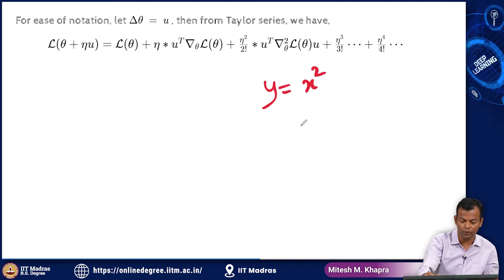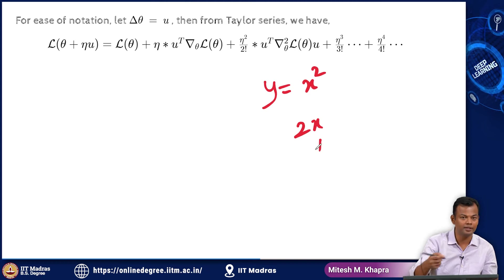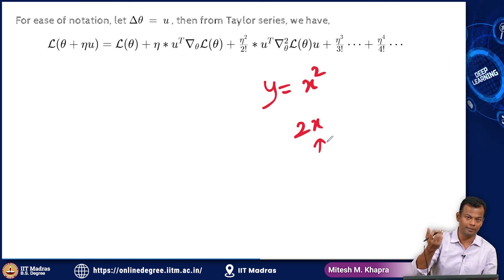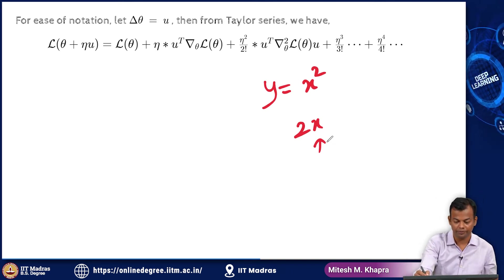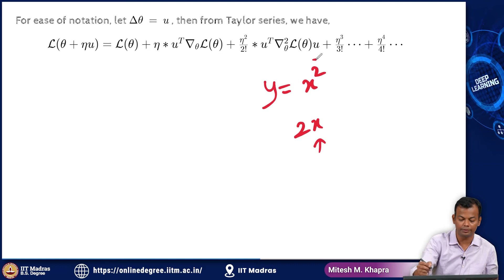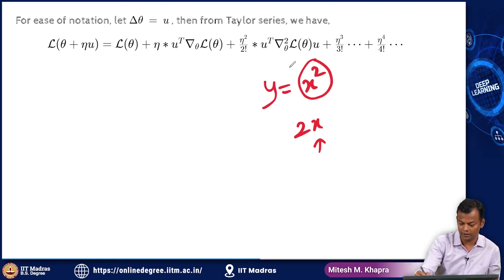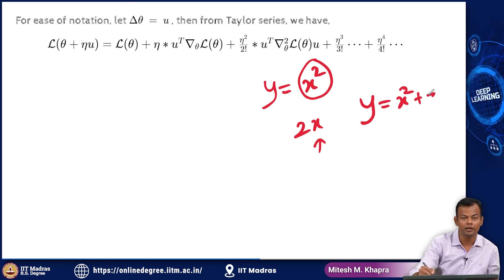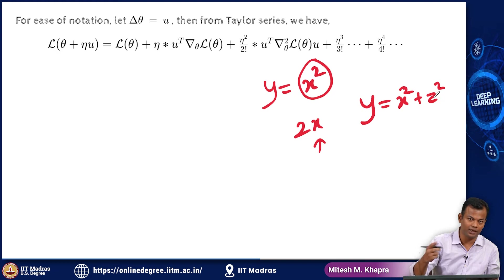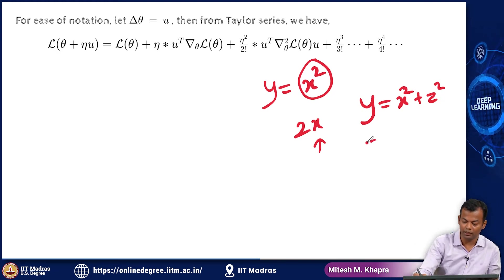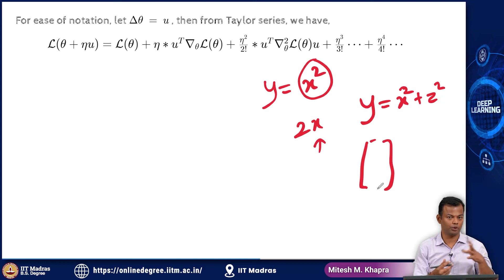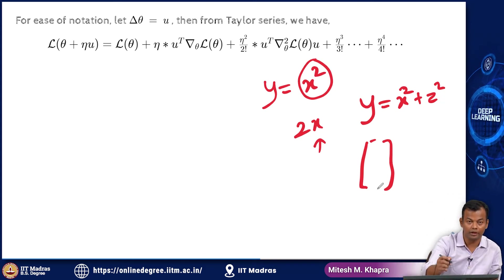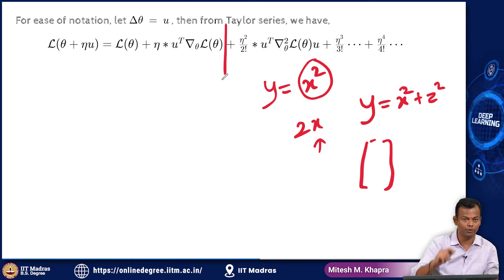If you have a scalar function y = x², the derivative is 2x — at a particular value of x you get a scalar. So the derivative of a scalar with respect to a single variable is a scalar. But if you have a multivariable function like x² + z², you can take the derivative with respect to x and also with respect to z, and you will get a vector — which is essentially the gradient.